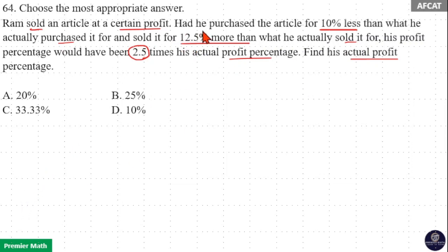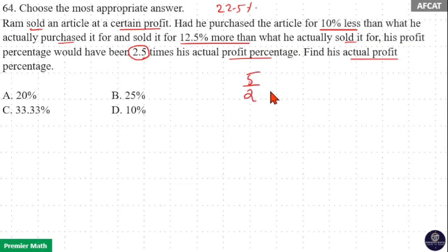The variation in sell price and cost price is equal to 12.5 percent minus minus 10 percent, which is equal to 22.5 percent. So this 22.5 percent forces a 2.5 times increment in the actual profit percentage. That is 2.5 times means five by two, so two parts as the actual profit percentage and five parts as the present profit. The actual profit percentage must be a multiple of two.